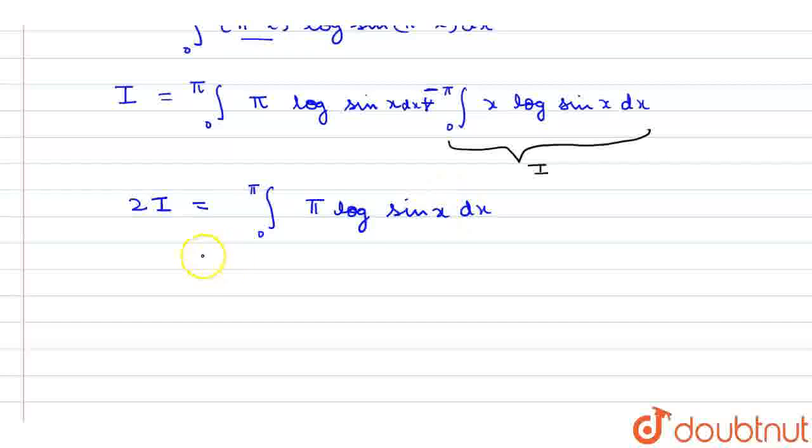Again using the property of definite integrals, it will be twice of pi times integral from 0 to pi by 2 of log sin x dx, and this equals 2I. So these twos cancel. Therefore I equals pi times integral 0 to pi by 2 of log sin x dx.